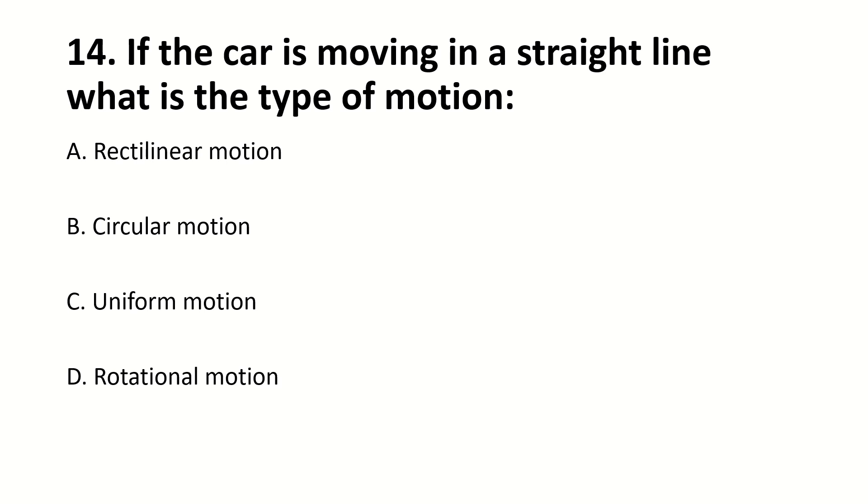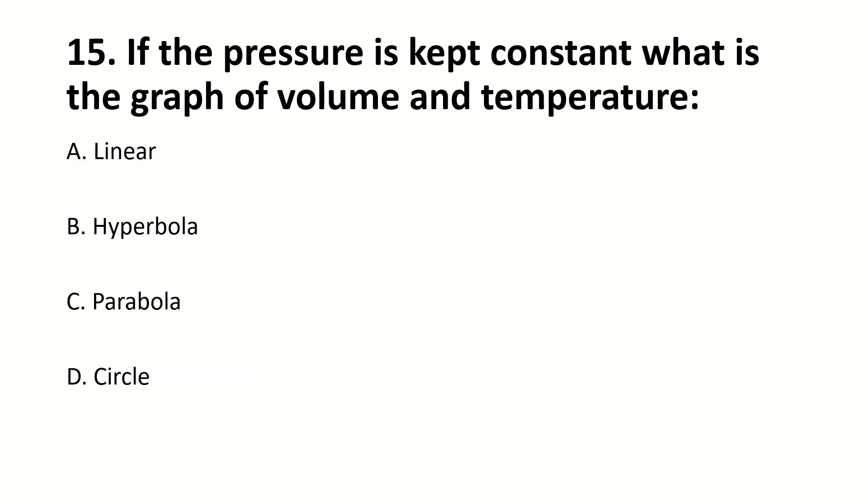If the car is moving in a straight line, the type of motion is linear motion. If the pressure is kept constant, the graph of volume and temperature is linear.